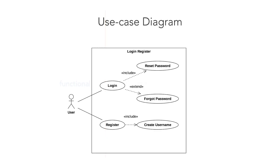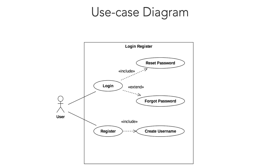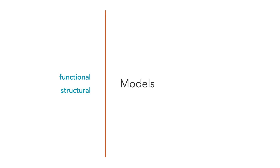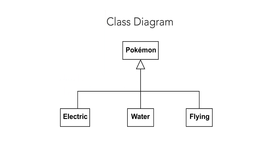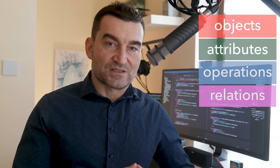The Use Case Diagram describes the functional model of a system — that is, the functionality of a system from the user's point of view. To describe the structure of a system, UML provides structural diagrams. We'll talk about the Class Diagram, which can be used to describe the structure of a system in terms of objects, attributes, operations, and relations.